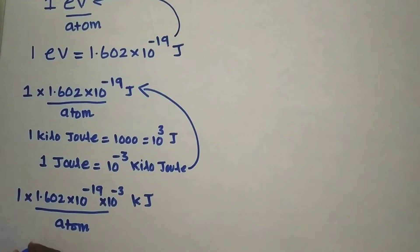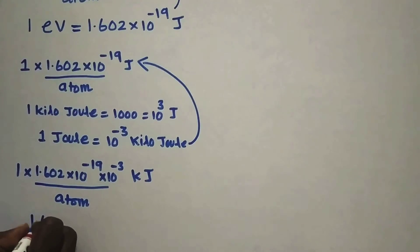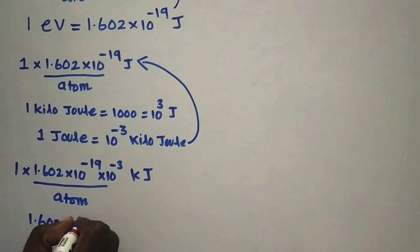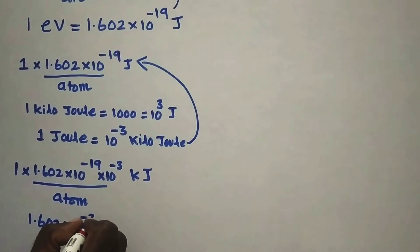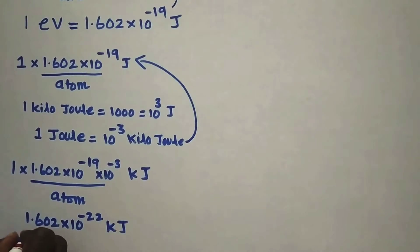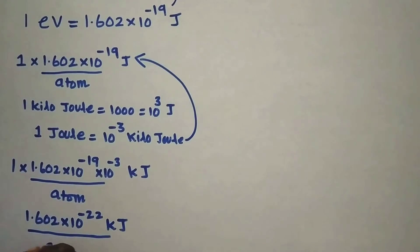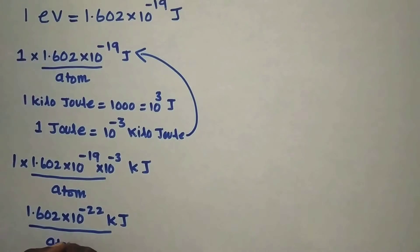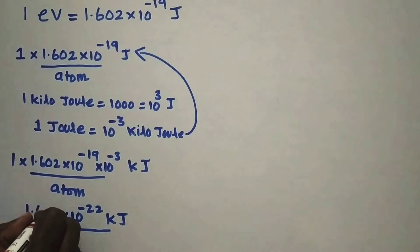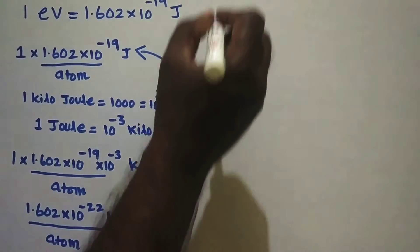Then it becomes 1.602 × 10⁻¹⁹⁺⁽⁻³⁾ = 1.602 × 10⁻²² kilojoule divided by atom.